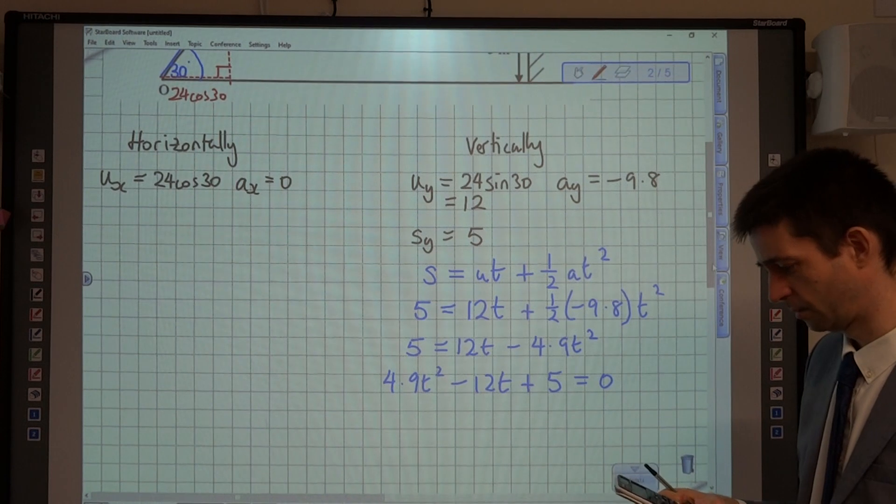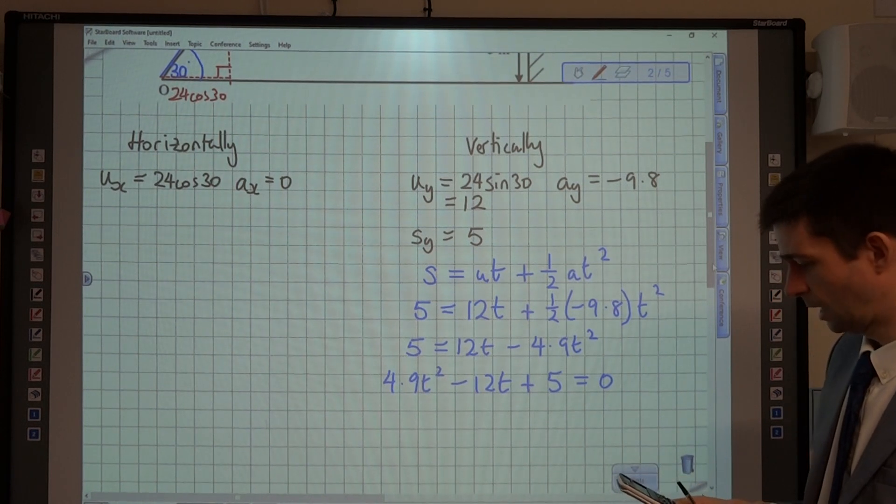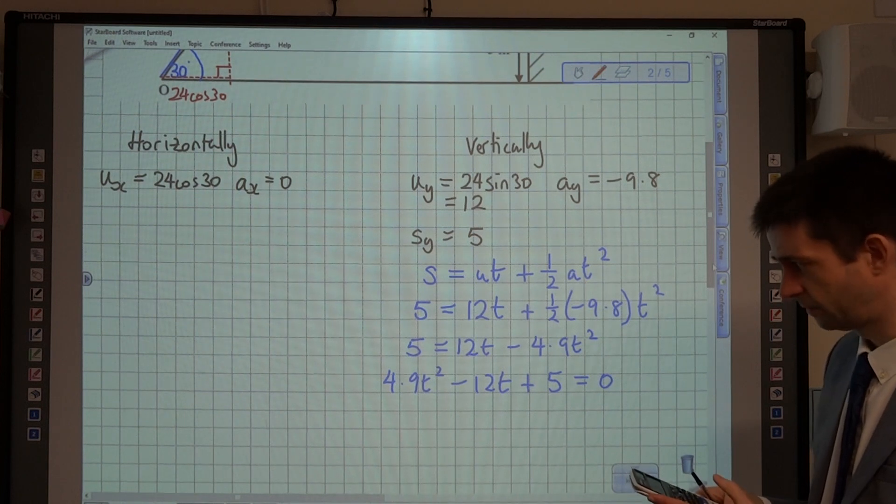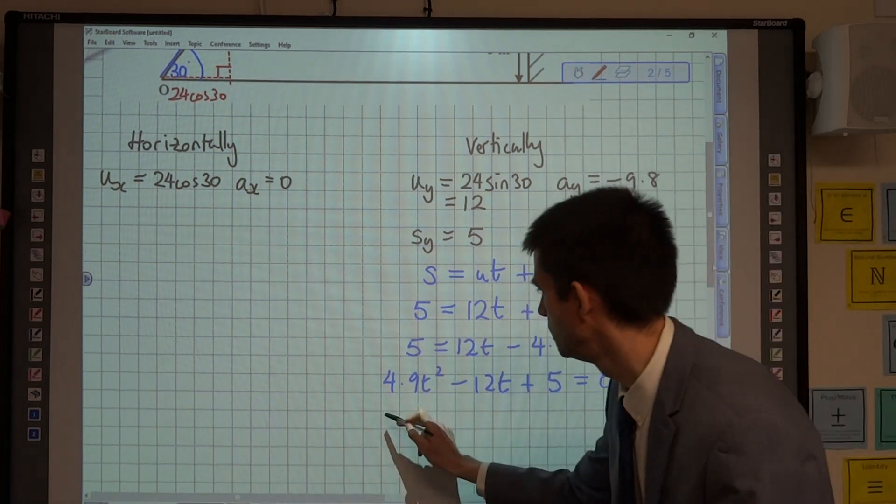So we're going to equation, polynomial degree 2. A is 4.9, B is negative 12, and C is positive 5. And it's giving me two solutions for T.